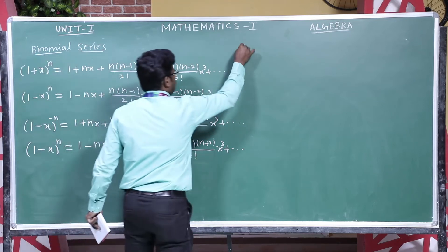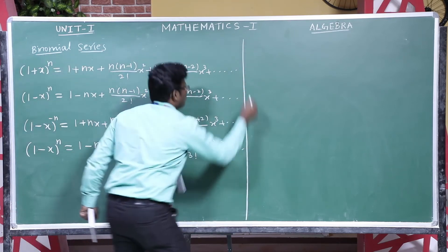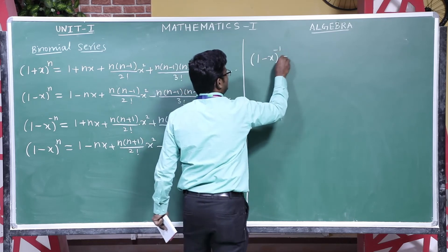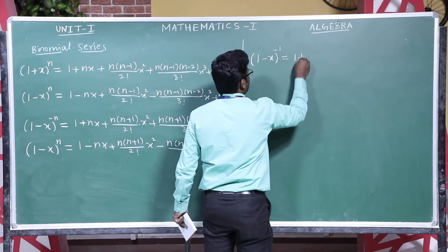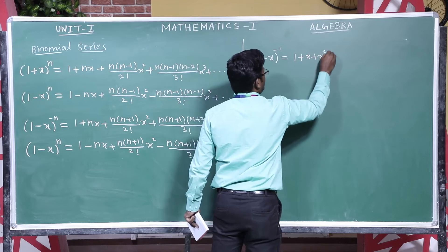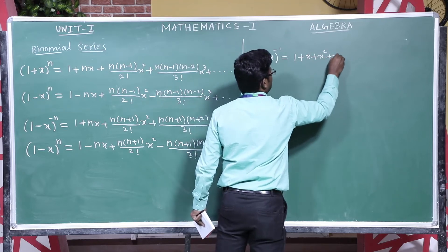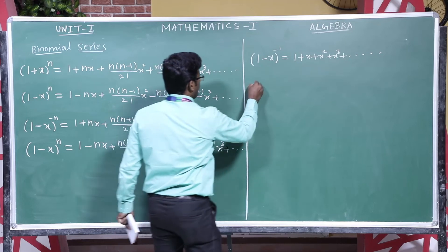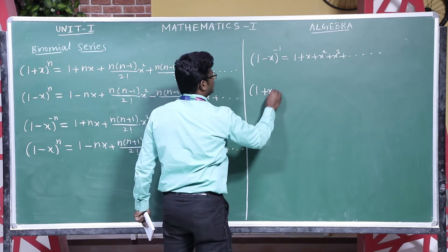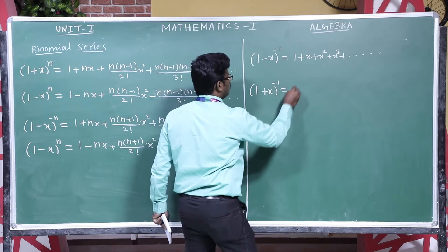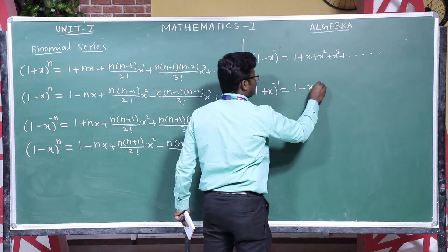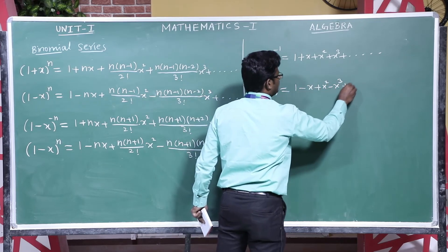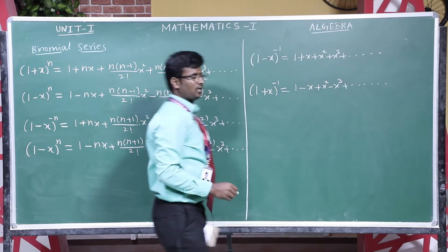Then (1 − x) whole inverse equals 1 plus x plus x squared plus x cubed, and so on. Then (1 + x) whole inverse equals 1 minus x plus x squared minus x cubed plus x to the power 4, and so on.